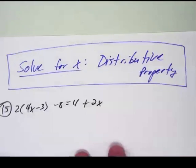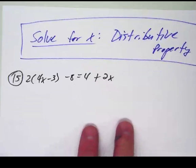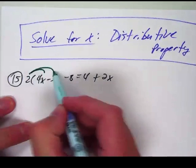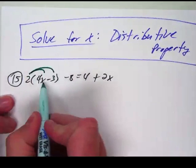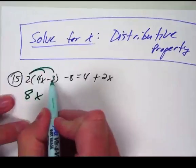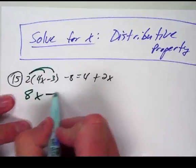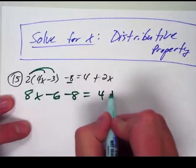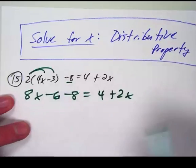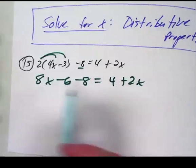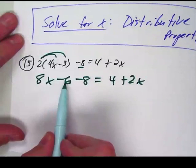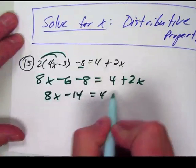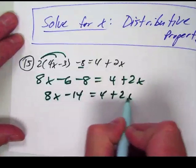So if I'm going to solve for x using the distributive property, here is number 15 written down. I'm just going to take the two and give it to each piece: 2 times 4x is 8x, 2 times negative 3 is minus 6, minus 8 which is already there, and then I've got 4 plus 2x on the other side. Now combining terms — those are just numbers — I've got 8x minus 14 equals 4 plus 2x.